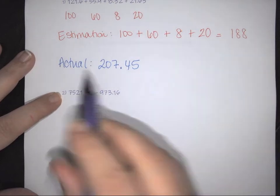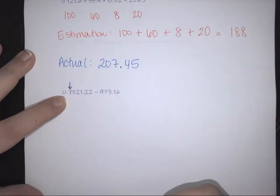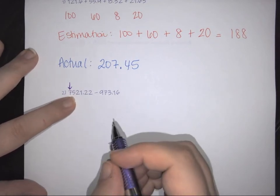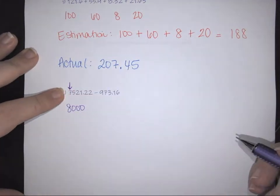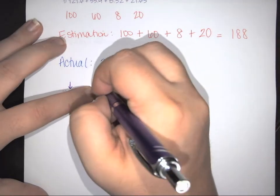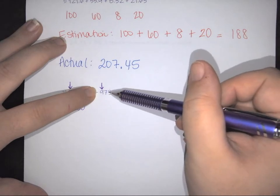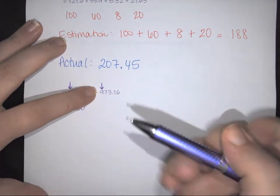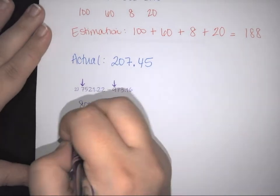Looking at another example: for 7521, the leftmost digit is 7. The digit next to it is 5, so it rounds up. Since the 7 is in the thousands place, this rounds up to 8,000. For 973.16, the leftmost digit is 9; the next digit is 7, which is greater than 5, so the whole number rounds up. Since 9 is in the hundreds place, it rounds up to the next hundred — which in this case is 1,000.